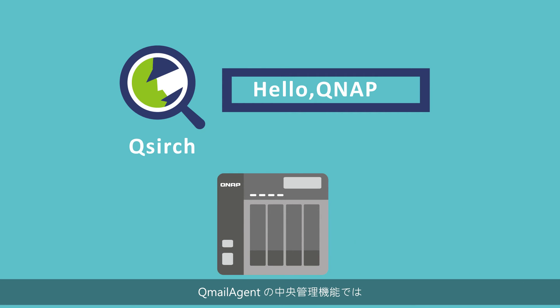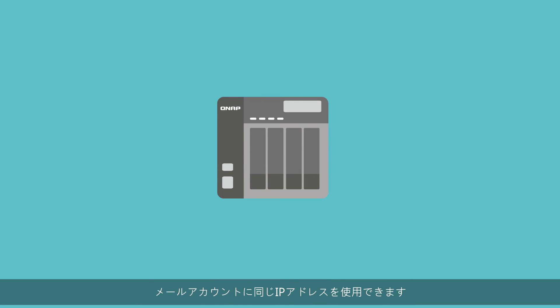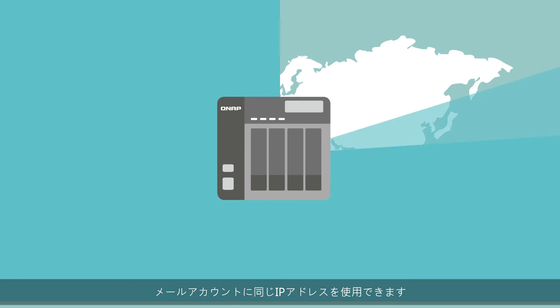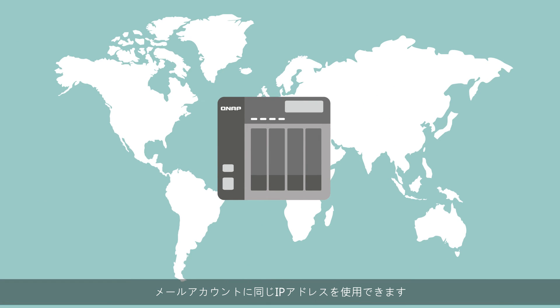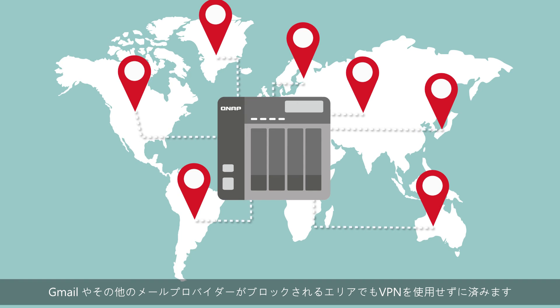QMail Agent Central Management also allows you to use the same IP address for your email accounts, potentially avoiding privacy issues and bypassing the need to use VPNs in areas where Gmail and other email providers are blocked.